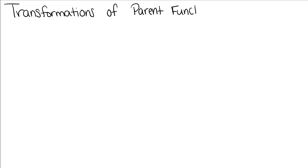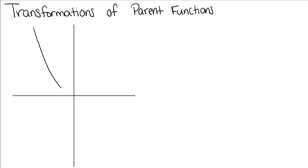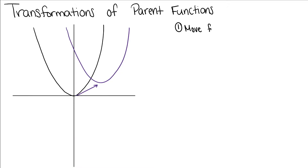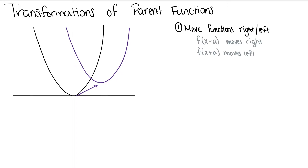A transformation is when we move one function to somewhere else within the coordinate plane. There are four transformations we can make. We can move a function right or left. When we move a function right, we subtract that value from our x. And when we move it left, we add it. So whenever we're looking at what's happening on our x, we say the opposite to know whether we move right or left — minus means we move right, and plus means we move left.